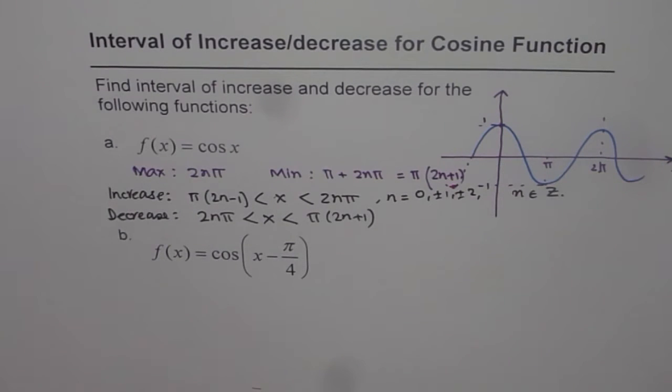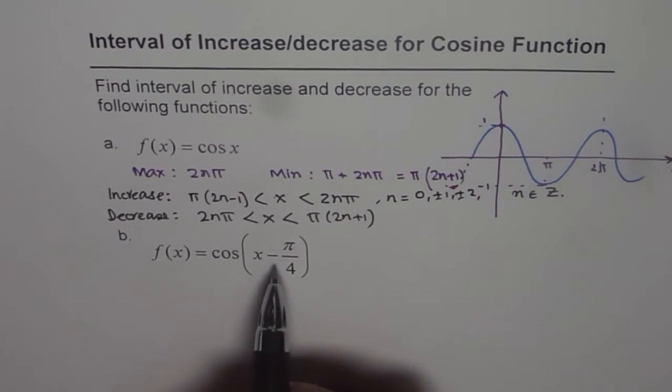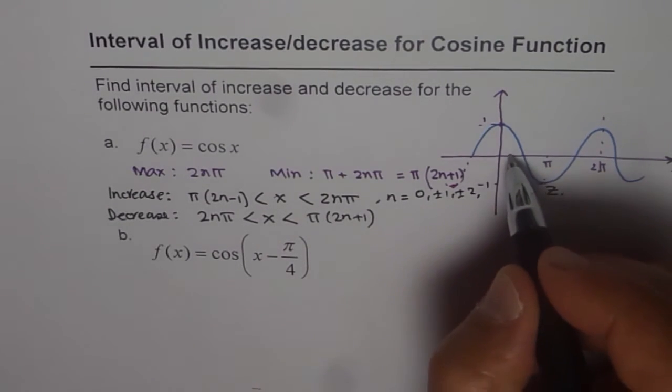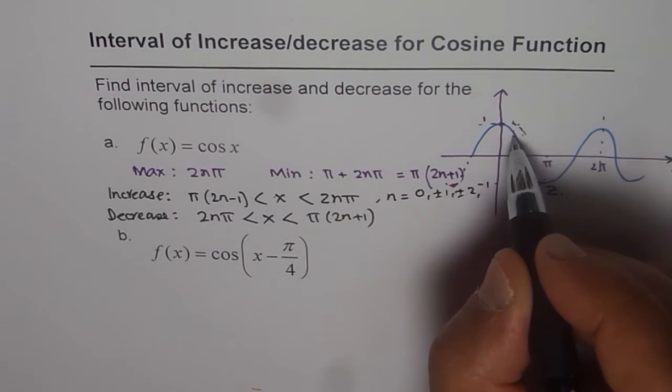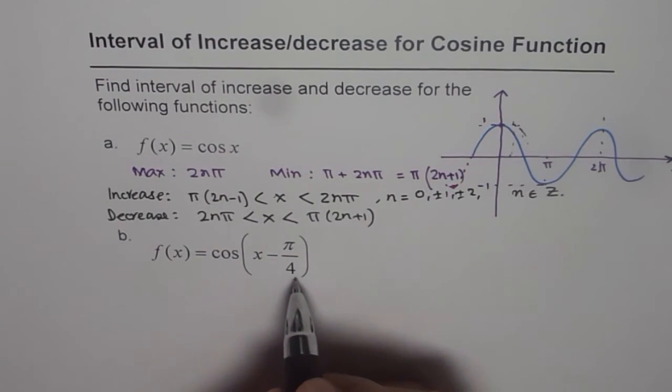Now, it's up to you. How do you answer this part B, which is f of x equals cos of x minus pi by 4. What should be the interval of increase and decrease here? Well, as you know, this function is shifted by pi by 4 to the right. So the whole function shifts like this here. So basically it is a cosine wave, which starts after pi by 4.